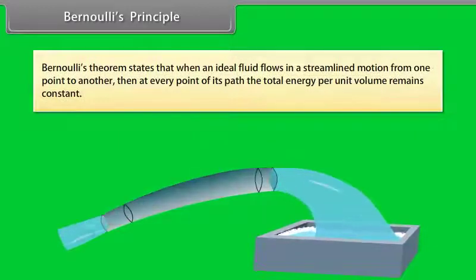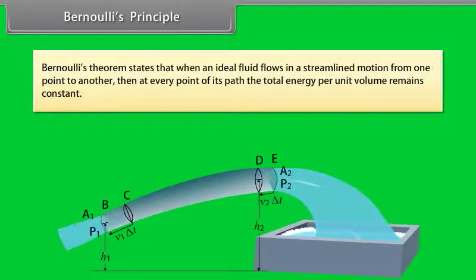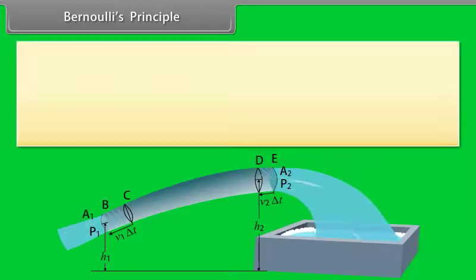Bernoulli's Principle. Bernoulli's theorem states that when an ideal fluid flows in a streamlined motion from one point to another, then at every point of its path, the total energy per unit volume remains constant.